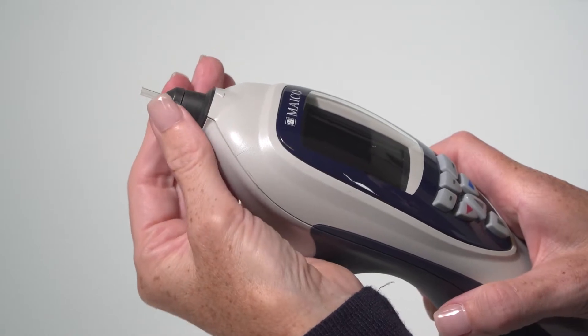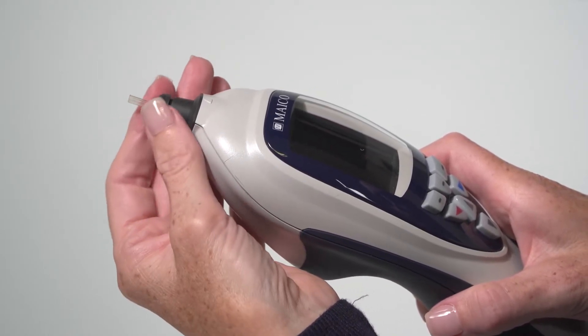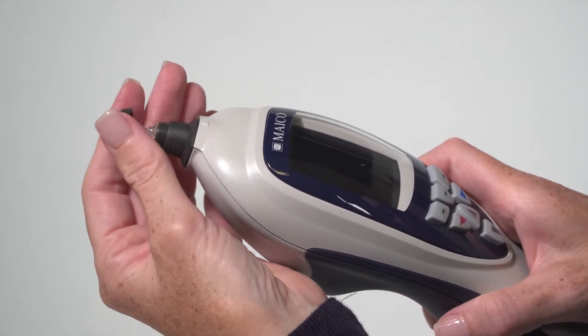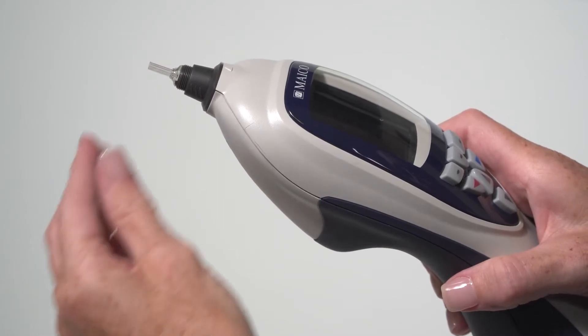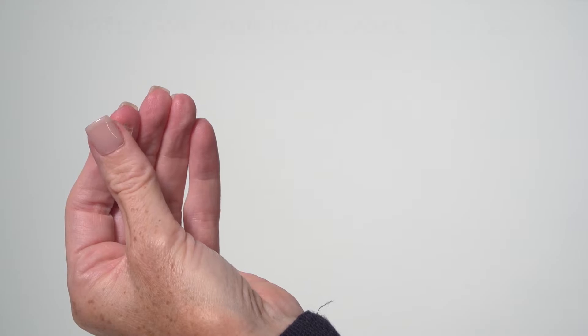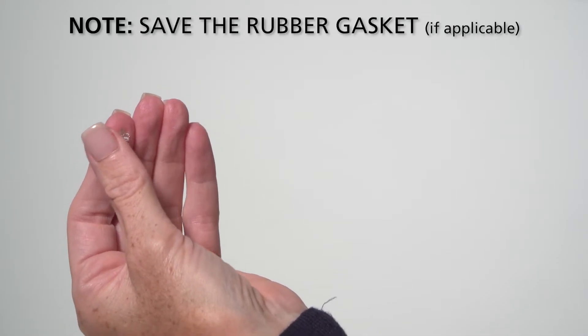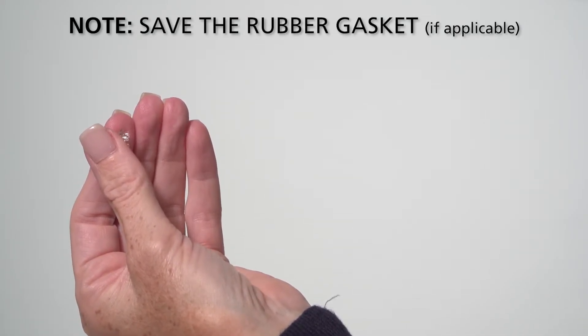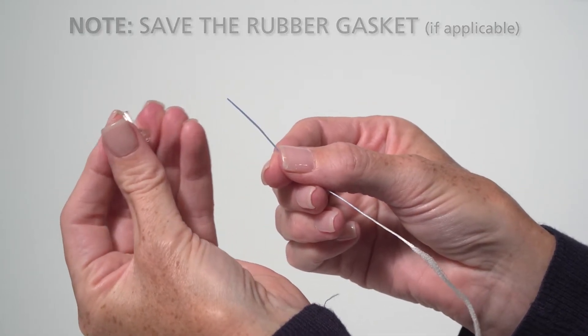To clean the probe tube, start by turning the probe cap in a counterclockwise direction. Never clean the probe tube while still attached to the probe. Take the plastic probe tube out of the probe. Depending on the tympanometer used, there may be a rubber gasket. Do not discard this rubber piece as it must be in place when cleaning is completed.